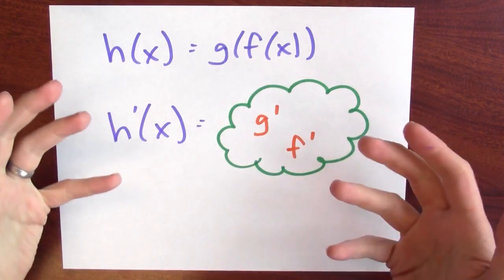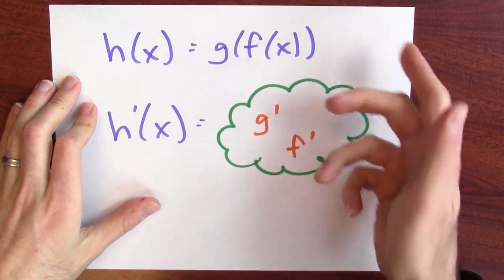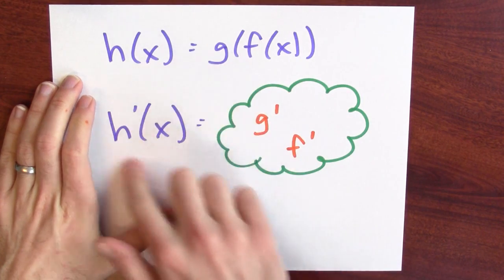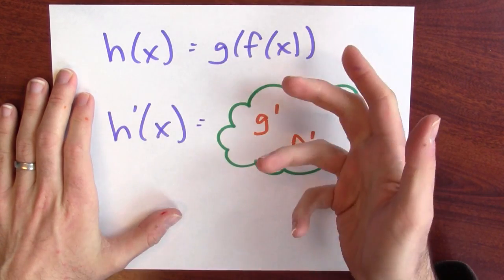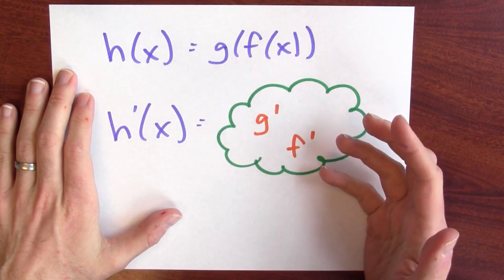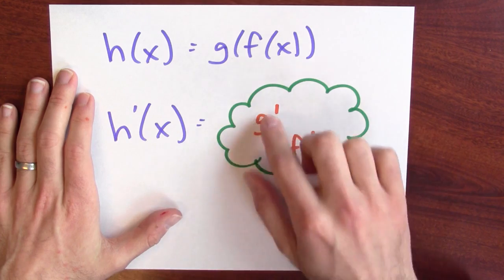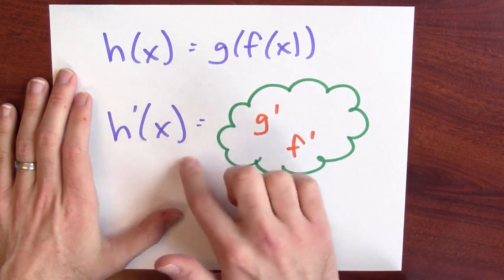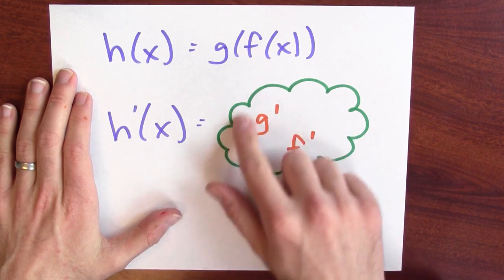We need some framework, some general picture that lets us understand how one thing changing affects something else, and how that thing's changing goes on to affect something else. Specifically, if I've got some function h, which is a composition of two functions — g of f of x in this case — I'd like to know something about the derivative of h. I want a formula for the derivative of h in terms of the derivatives of f and the derivative of g.